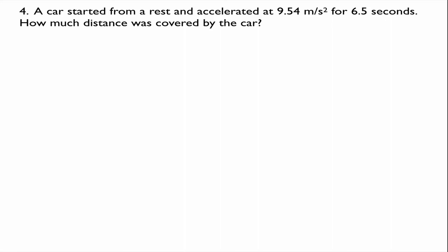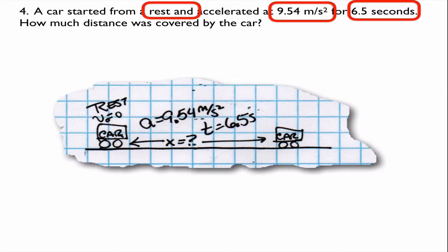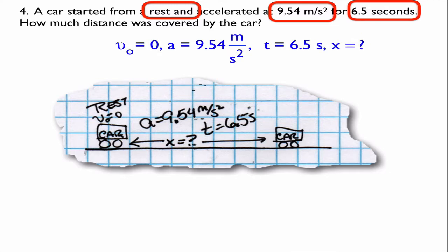Problem number four. A car started from rest and accelerated at 9.54 meters per second squared for 6.5 seconds. How much distance was covered by the car? Clues: 'rest' means some velocity is zero. 'Accelerated' means velocity changes at 9.54 meters per second squared. And it does that for 6.5 seconds. So my list of givens: initial velocity is zero because that's the beginning of the story. Acceleration is 9.54 meters per second squared. Time is 6.5 seconds. And I'm looking for how much distance it traveled.